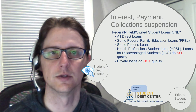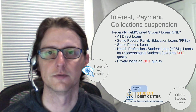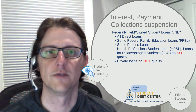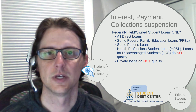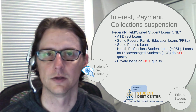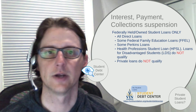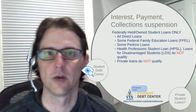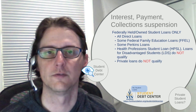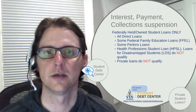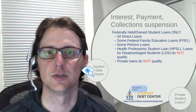So federally held — how do I know if my student loans are federally held and eligible for this suspension? Federally held loans include all direct loans: whether they're direct unsubsidized, direct subsidized, direct grad plus loans, or direct parent plus loans. Anything that has "direct" in the name will qualify for this CARES Act suspension period.